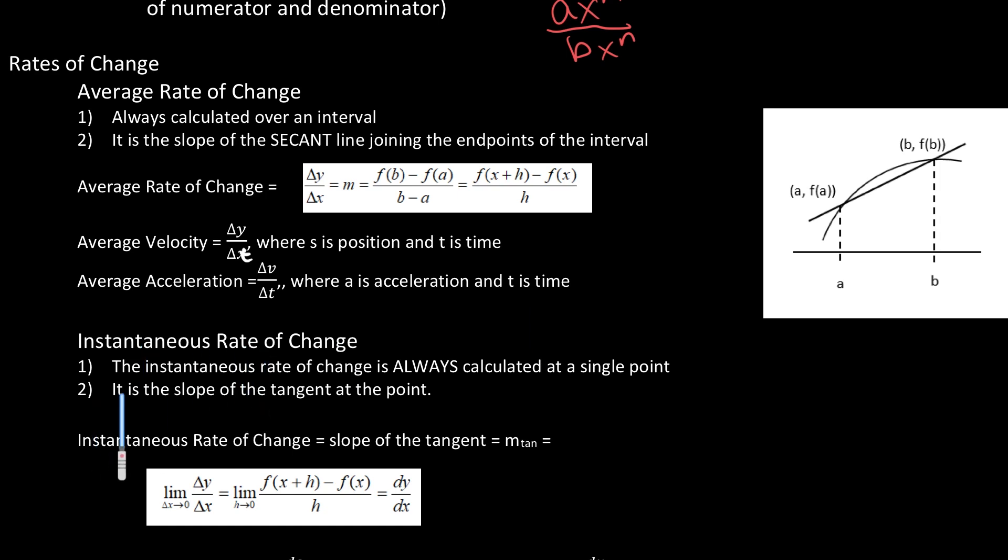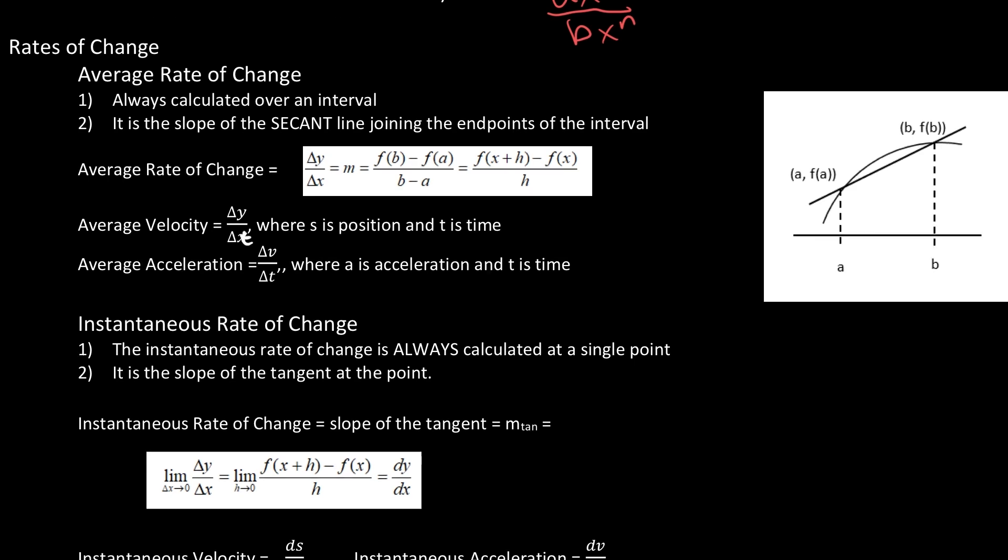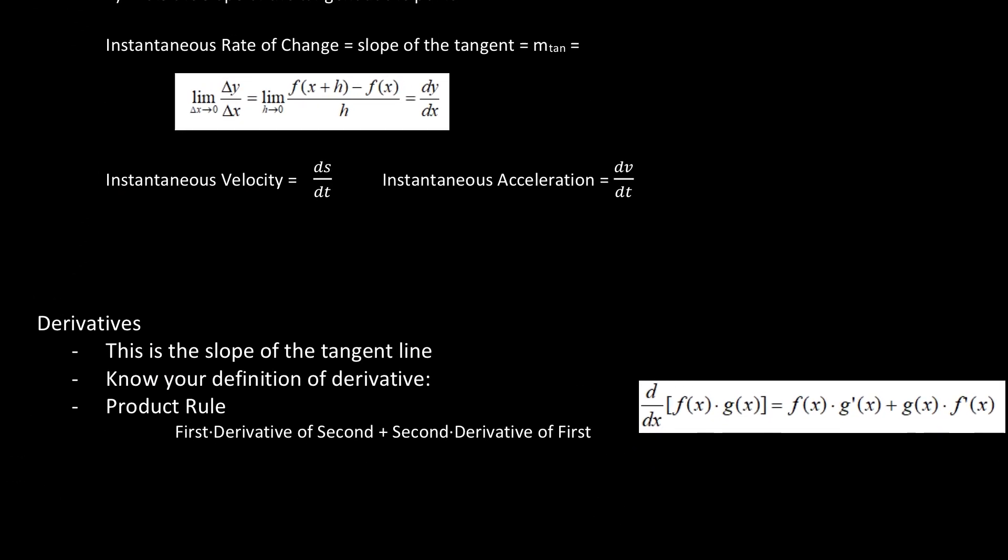Instantaneous rate of change. This is the difference between average rate of change and instantaneous. Instantaneous happens at a point, it's always calculated at a single point, and it's the tangent line. So it's the slope of the tangent line. Instantaneous rate of change is the slope of the tangent, which equals this limit: limit as h goes to zero of f(x+h) minus f(x) over h. This is the definition of a derivative. As far as instantaneous velocity is concerned, we're going to say that this is ds over dt, change of position over change of time. And instantaneous acceleration is dv over dt. But again, these are derivatives because they do happen at a single point.